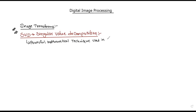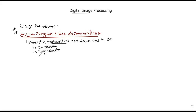In image processing — a powerful mathematical technique used in image processing for various purposes. We can do it in image compression, noise reduction, and feature extraction.